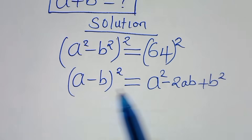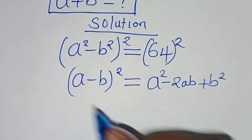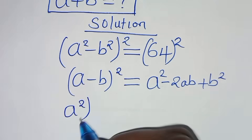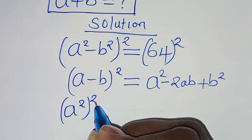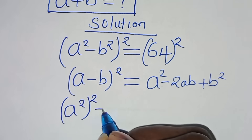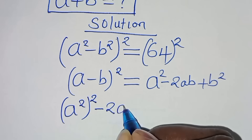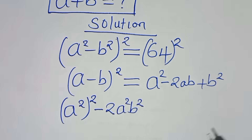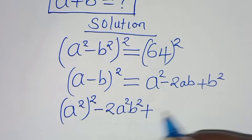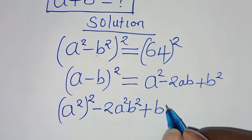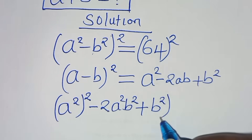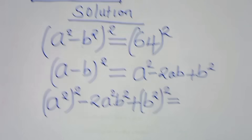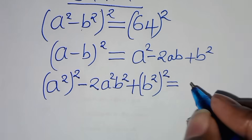Applying this algebraic identity, this implies we have a raised to the power of 4, subtract 2 times a squared times b squared, then plus b to the power of 4. This is equal to 64 squared.